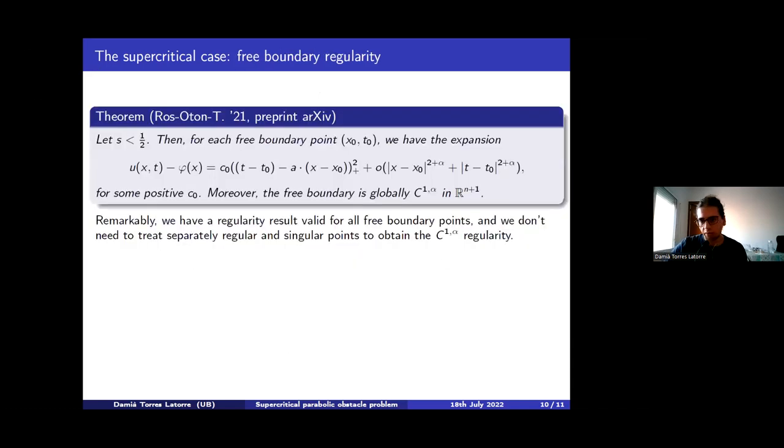Now, moreover, from this optimal regularity, we are able to recover the free boundary regularity and an expansion. This is not typical in a free boundary problem. Typically, you have to do more work. But here, from the C^{1,1} regularity, we can, without a lot of work, get that the derivatives of the function at the free boundary point are Hölder continuous, all of them. And then we can recover that the free boundary is C^{1,α}. And this C^{1,α} is global. It's not at the regular point. It's at all points. And also, we have this non-degeneracy that says we know that the function is C^{1,1}, but the function is C^{1,1} at all free boundary points. And it cannot be better than C^{1,1} because we have this quadratic term that is only at one side of the free boundary.